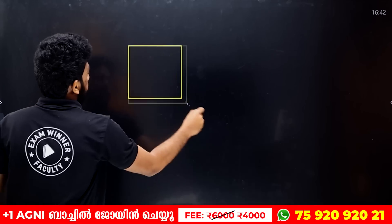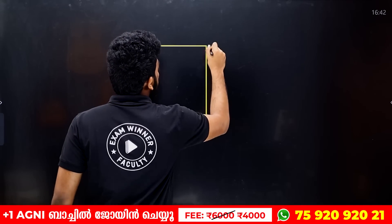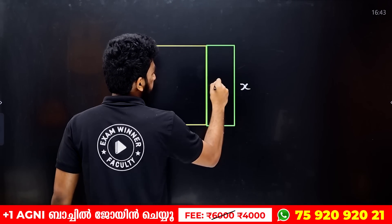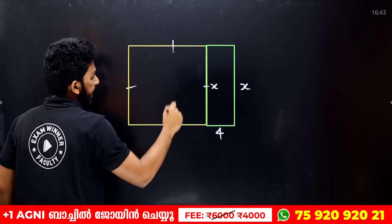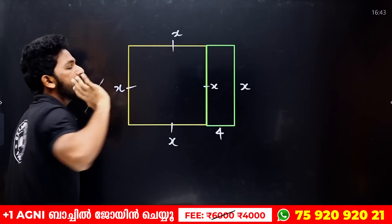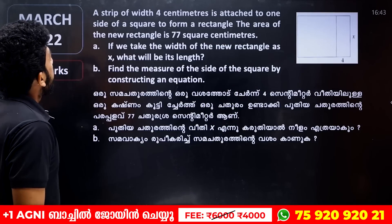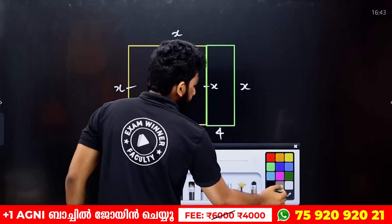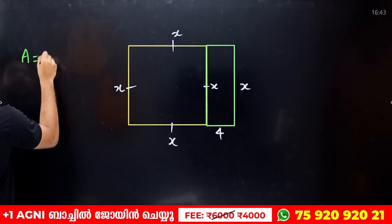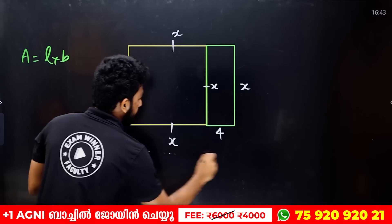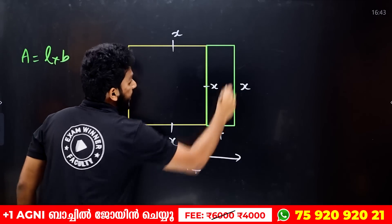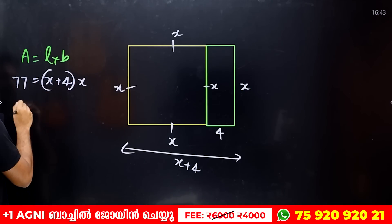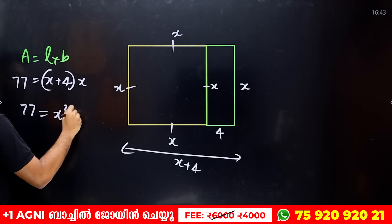It is a square. If you leave here, you can go to x and x. The area of the new rectangle: let's start this question. x plus 4 — now I have height x. Now x plus 4 into x is equal to 77. Now 77 is equal to x squared plus 4x.